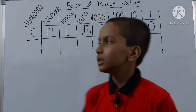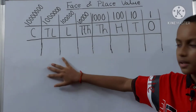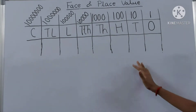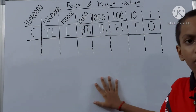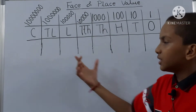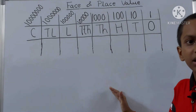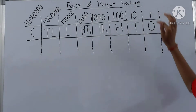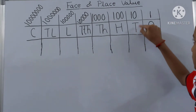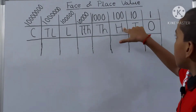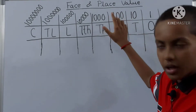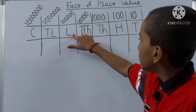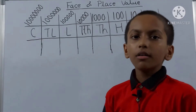Now let's see the place value. You see over here I have written some places. You need to learn these places by heart — you cannot skip them if you have to find the place value of any digit. These places are in the Indian system, and I will make a separate video on the Indian and international system. Let's start from the right: O is ones (1), T is tens (10), H is hundreds (100), TH is thousands (1000), TTH is ten-thousands (10,000), L is one lakh (1,00,000), TL is ten lakhs (10,00,000), and C is one crore (1,00,00,000).